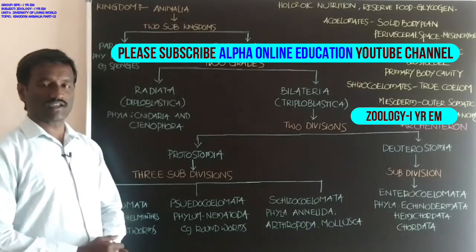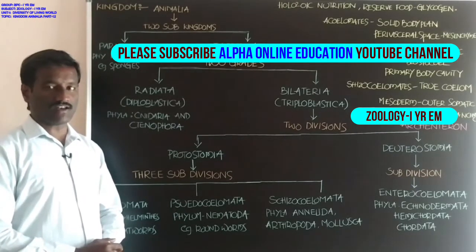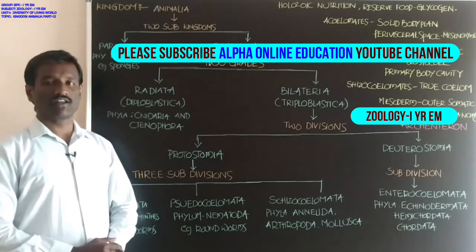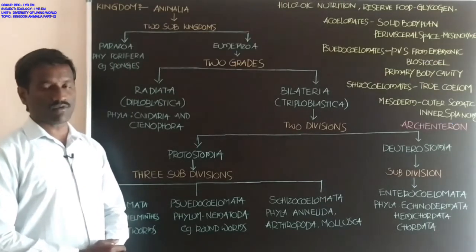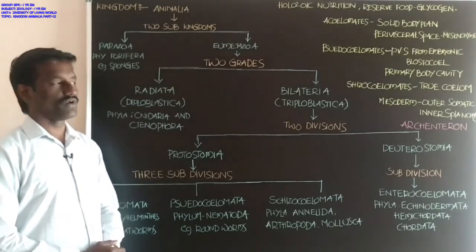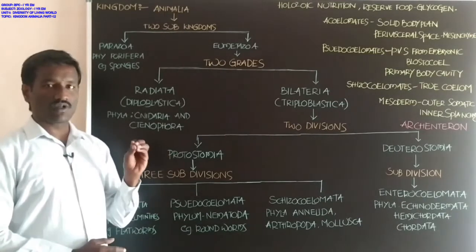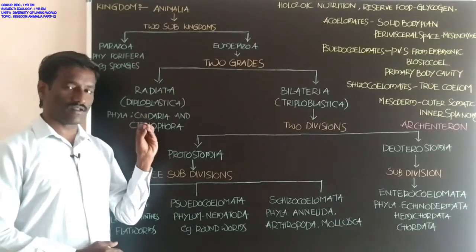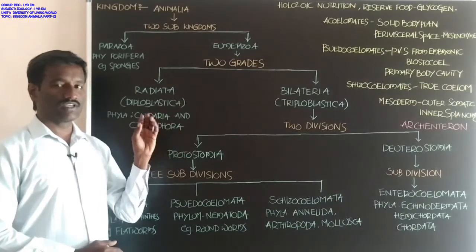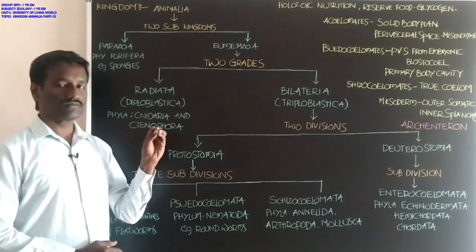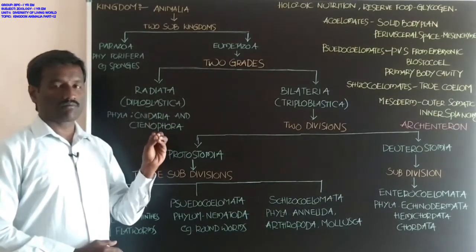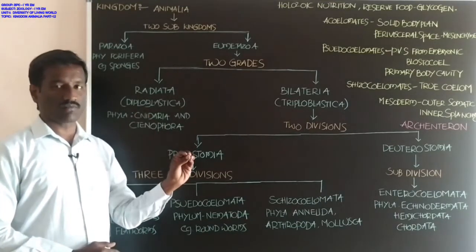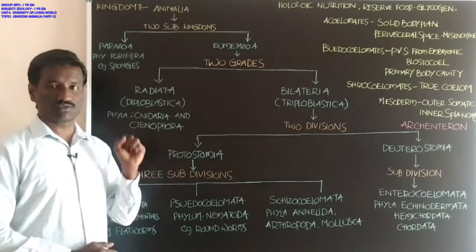Today's topic is Kingdom Animalia. This Kingdom Animalia includes all living animals. Some characteristic features are shown by living animals. All are multicellular animals, non-saprobic, and heterotrophs.